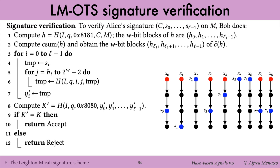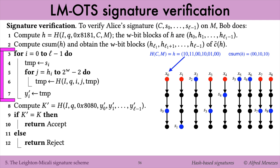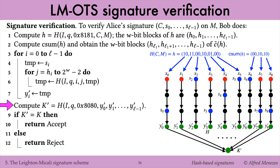To verify Alice's signed message, Bob hashes C together with M, computes the checksum of the hash value H, and forms the W-bit blocks H_i of H and its checksum. Then, for each W-bit block H_i, he computes the value Y_i' on the i-th hash chain, that is distance 2^{W-1} minus H_i from S_i. Finally, he computes the hash K' of the Y_i' values, and accepts the signature if and only if K' matches Alice's public key K.